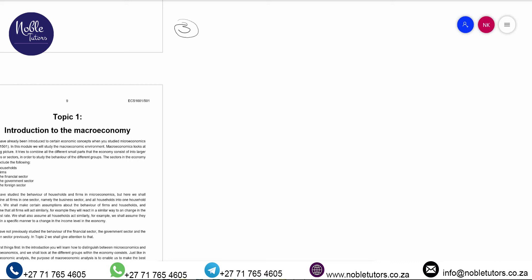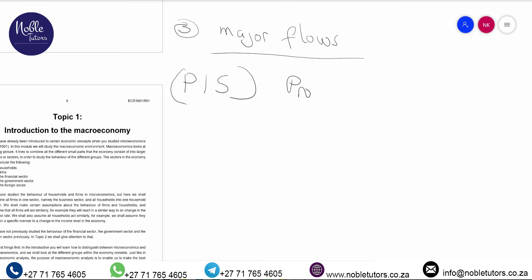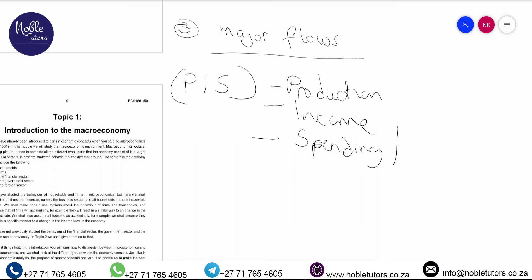Now, the three major flows in the economy. The three major flows include — using the acronym P-I-S — first: Production; second: Income; and lastly: Spending, which refers to trading or expenditure.